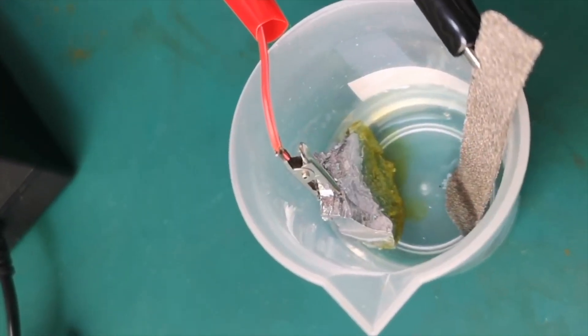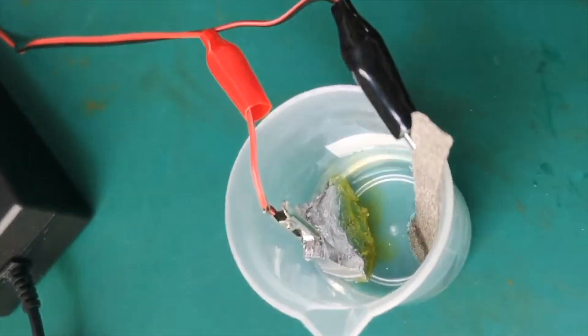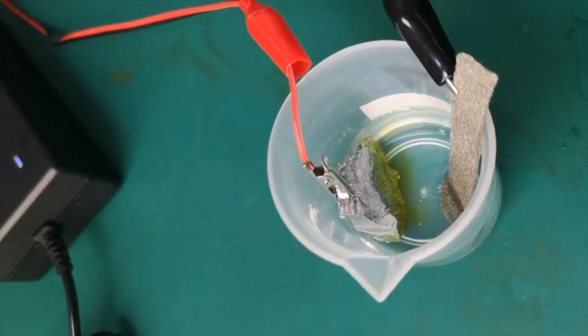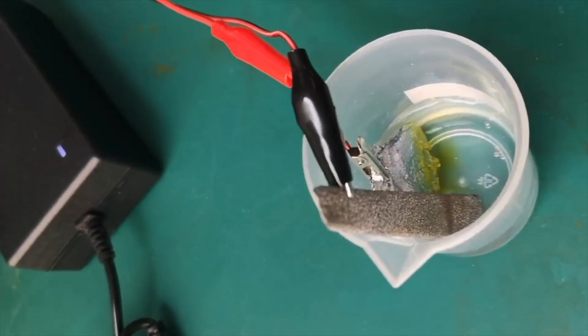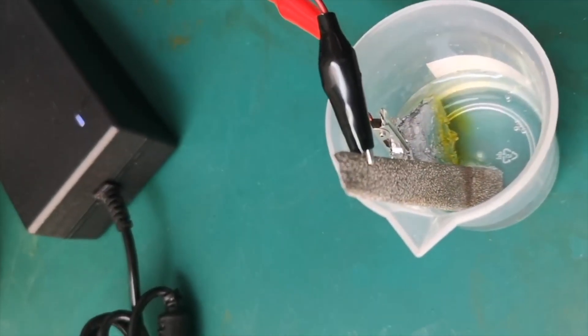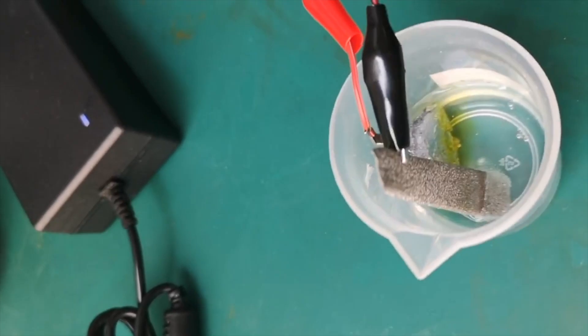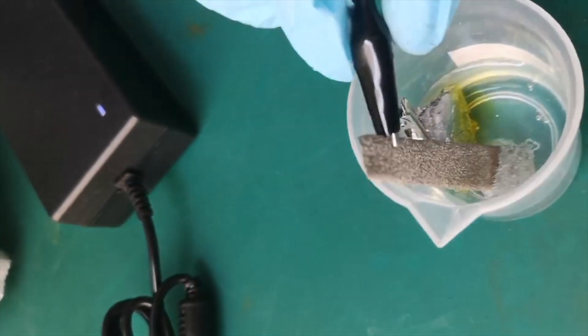For the first test, I took some sulfuric acid that I got on hand from last time. I connected the anode to the piece of chromium and the cathode to foam nickel. Here, the solution is already slightly colored since I switched on the power beforehand.